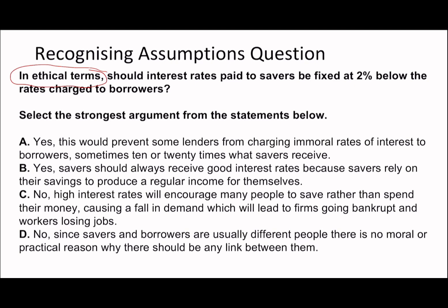Option B says savers should always receive good interest rates because savers rely on their savings to produce a regular income — but this just talks about needing a regular income with nothing about ethics, so it's not B. Option C says high interest rates will encourage people to save rather than spend, causing a fall in demand and leading to firms going bankrupt and workers losing jobs. That could be a valid point, but it doesn't address any ethical considerations and focuses too much on companies and workers.